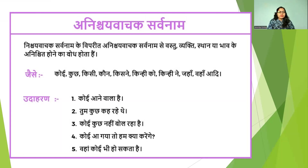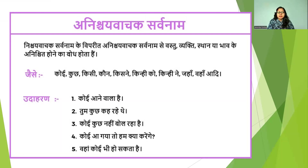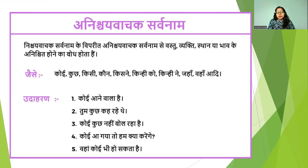Let us see that in detail. 'Koi aane baala hai' — someone is going to come, but I don't know who that someone is. 'Tum kuch keha rahe the' — you are saying something, but kuch means something indefinite. 'Koi kuch nahi bol raha hai' — someone is not saying anything. 'Koi aane gaya, toh ham kya kareinge?' — what will we do when someone comes? 'Wahaan koi bhi ho sakta hai' — there might be someone there. These words like koi and kuch are not giving us sure or definite answers, so these Sarvanam words are called A-Nishchitvachak Sarvanam.